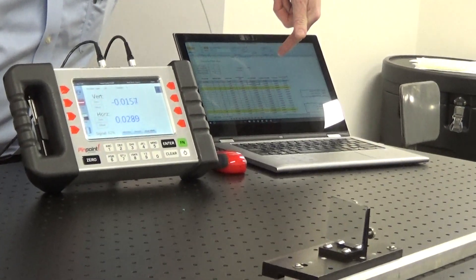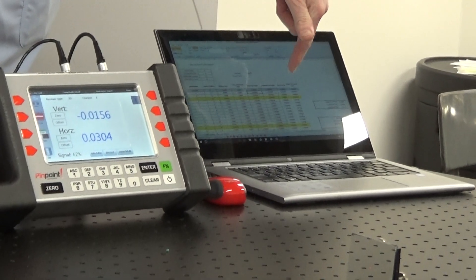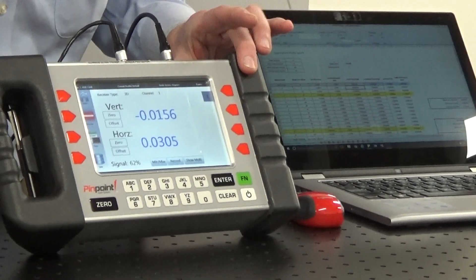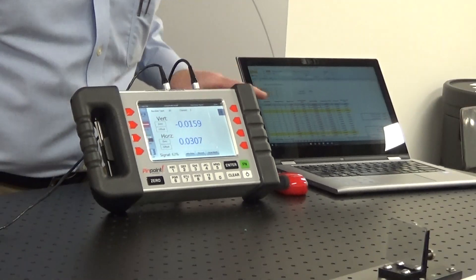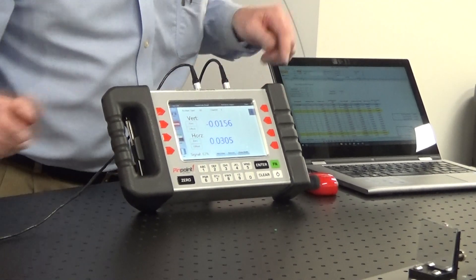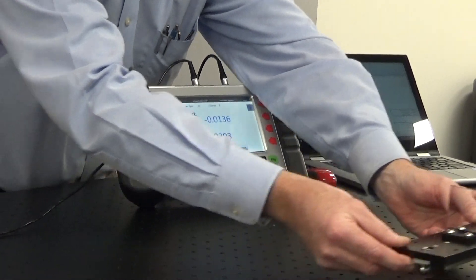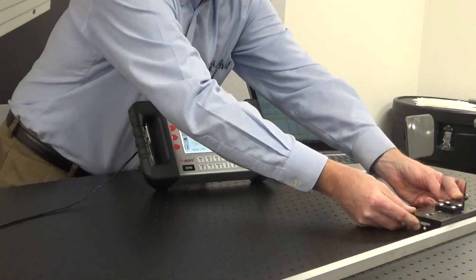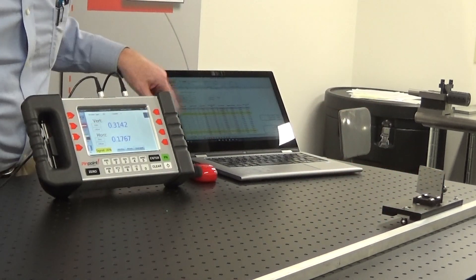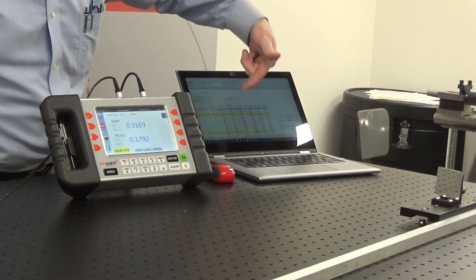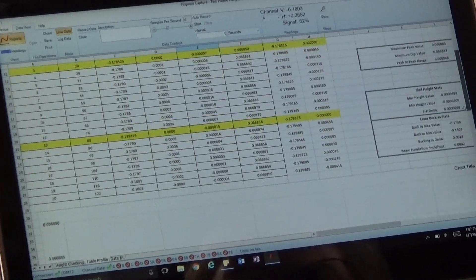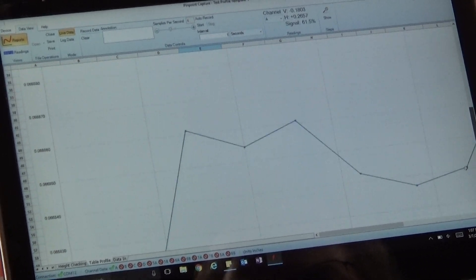We've also set up a laptop here with a spreadsheet application that's pulling data from the display unit. It's got a designated cell for each measurement location on your press surface. As this moves along, the readings are being recorded, and then eventually there's a plot that shows the surface profile of the particular measurement run.